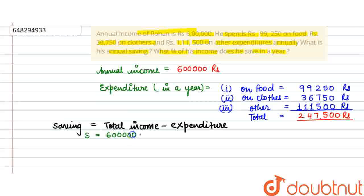Denoting savings as S, total income is Rs. 6,00,000 minus Rs. 2,47,500. On subtracting, the answer is Rs. 3,52,500. So this is the saving.